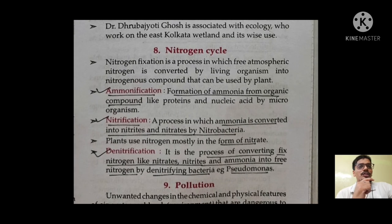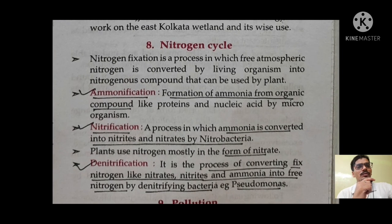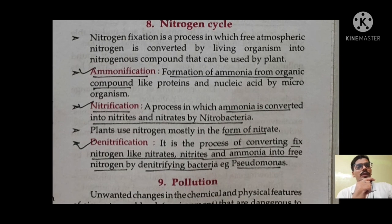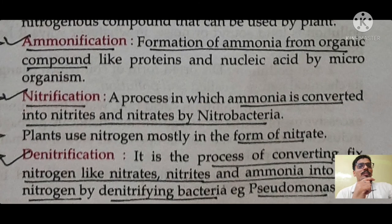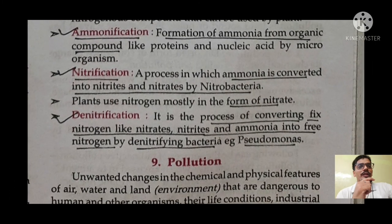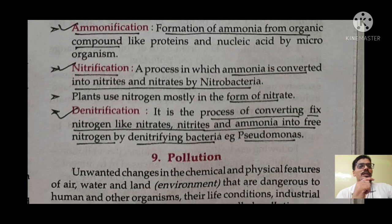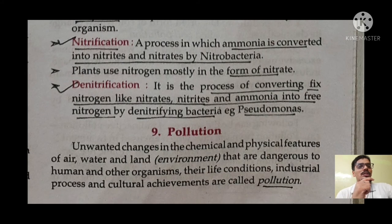Next is the nitrogen cycle, which we also covered in geography. Remember: ammonification is the formation of ammonia from organic compounds like proteins and nucleic acids by microorganisms. Nitrification is the process in which ammonia is converted into nitrites and nitrates by nitrobacteria. Plants use nitrogen mostly in the form of nitrate — very important point. Denitrification is the process of converting fixed nitrogen like nitrates, nitrites, and ammonia into free nitrogen, done by denitrifying bacteria such as Pseudomonas.